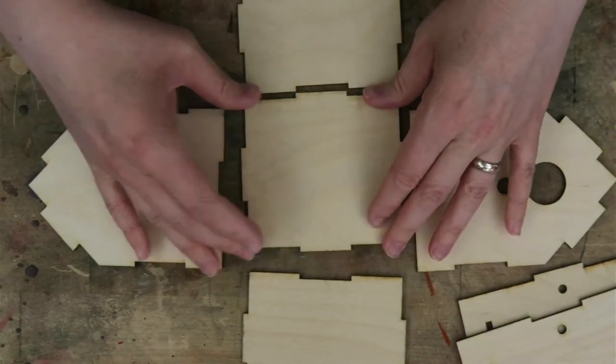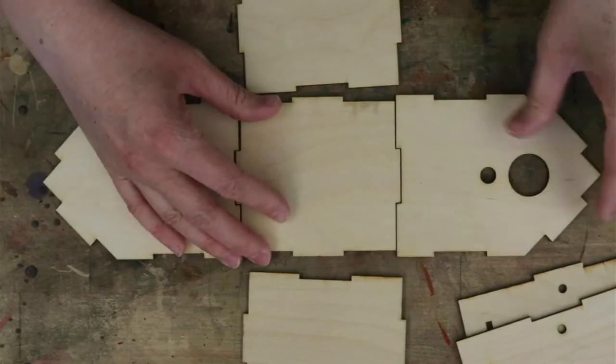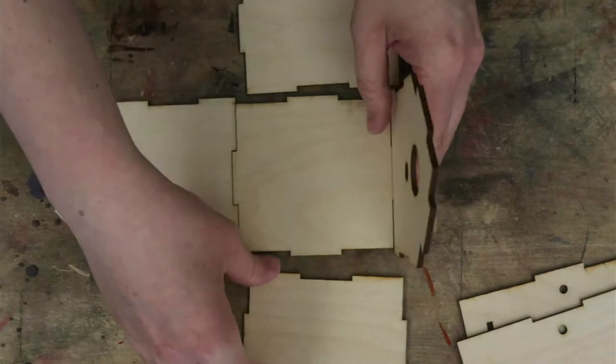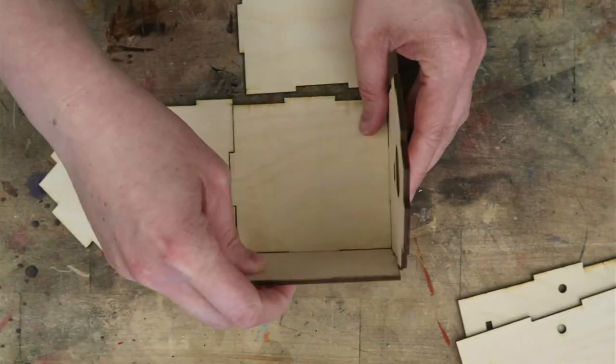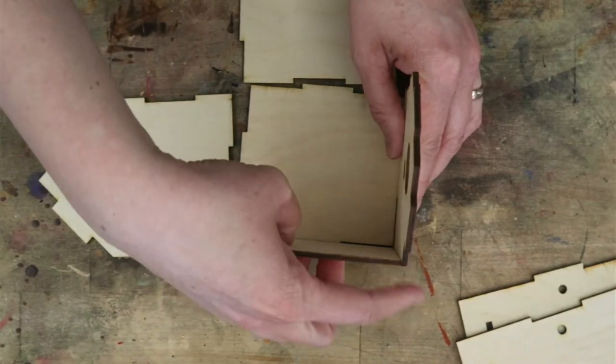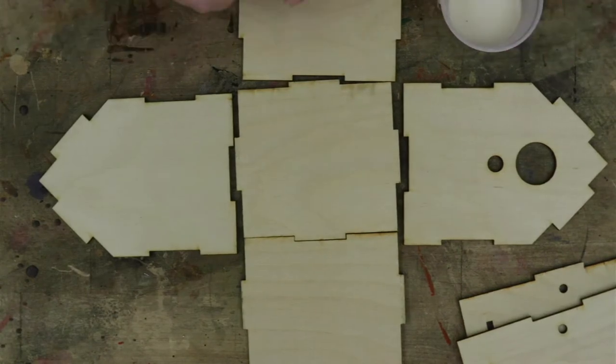So check and make sure your pieces all fit together nicely so that the sides sit nicely on top of the tabs in the floor and that they line up in the corners properly. And then we're going to try and glue it all together.